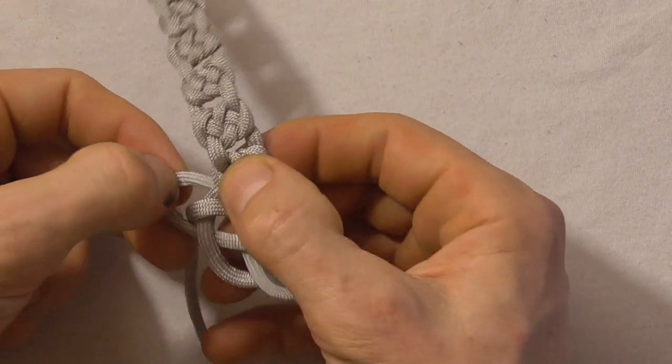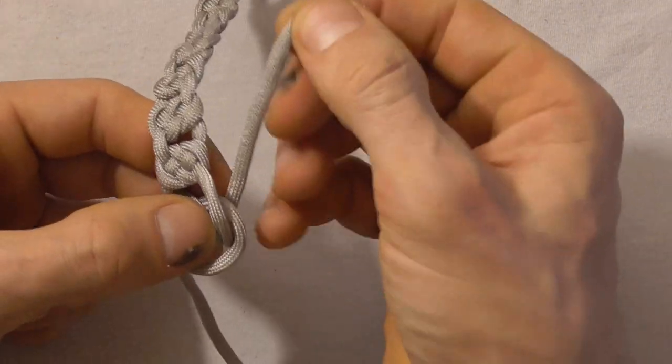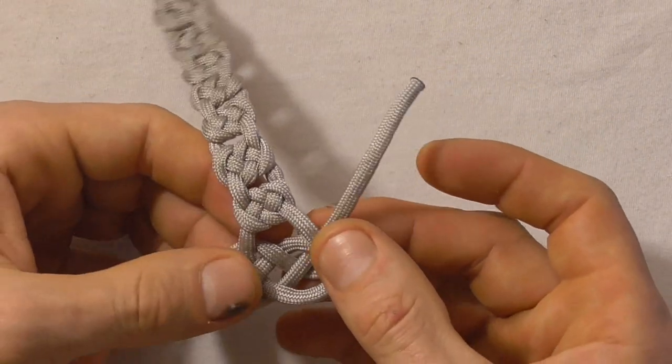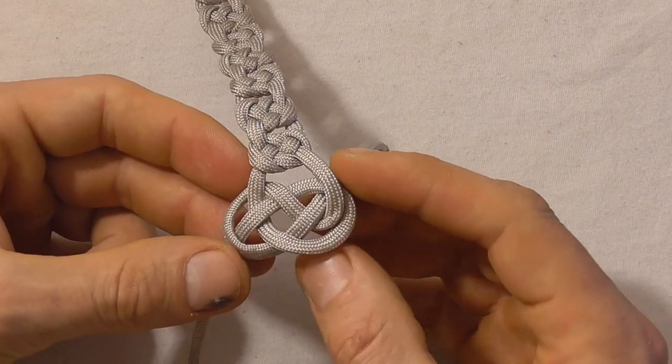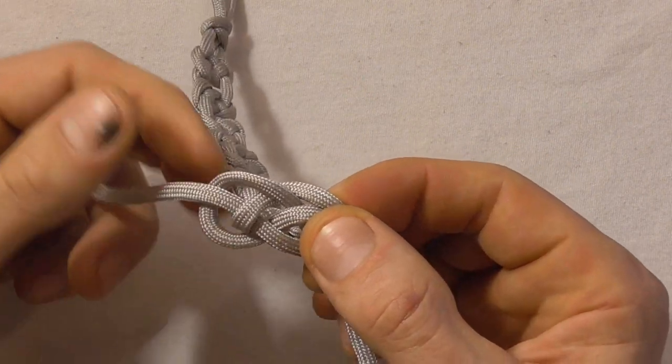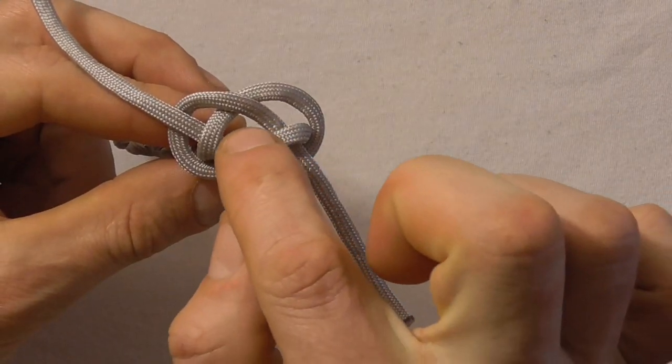Just want to adjust that right hand leg. Now we just want to rotate this knot so it's perpendicular to the rest of the bracelet. We want to open up this center.